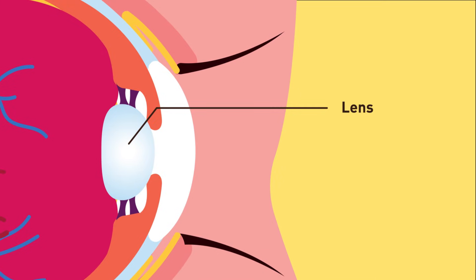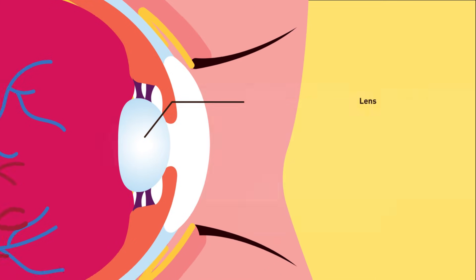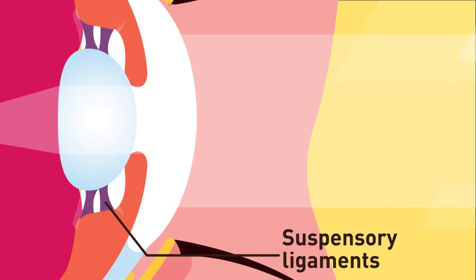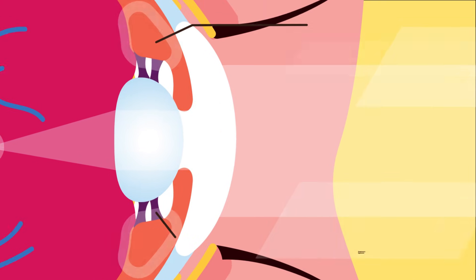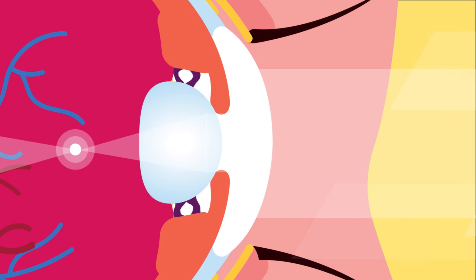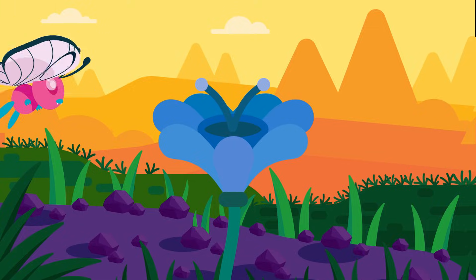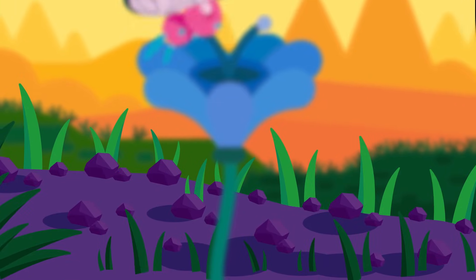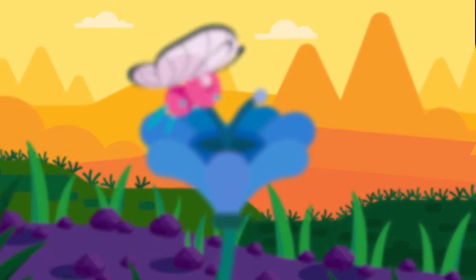The lens is soft, transparent, and elastic in nature. It helps to focus light onto the retina. Suspensory ligaments hold the lens in place. The ciliary body is a muscle that is able to contract and relax. This contraction adjusts the focus strength of the lens when seeing near or distant objects.